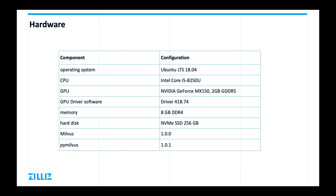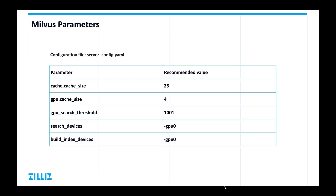First, in order to help you compare the benchmark test results between yours and ours, our machine's hardware configuration is as shown. We also need to know some config parameters of Milvus for the test based on our machine. The parameters can be found in the server config YAML file, which we introduced in the previous lesson.